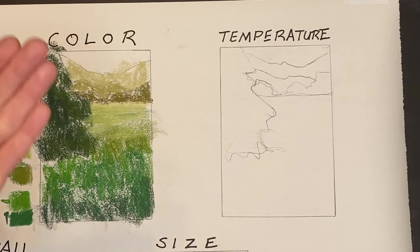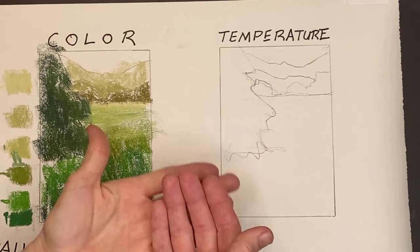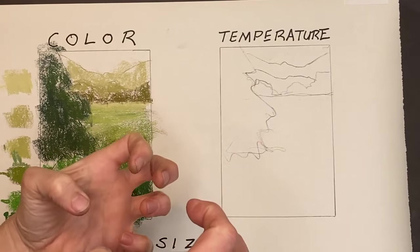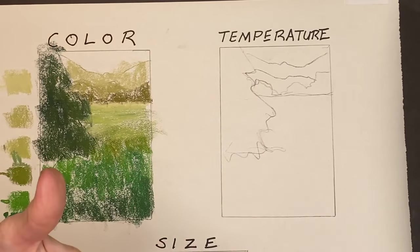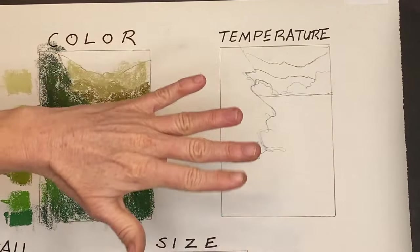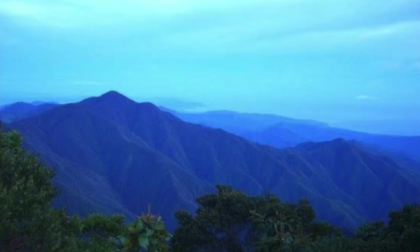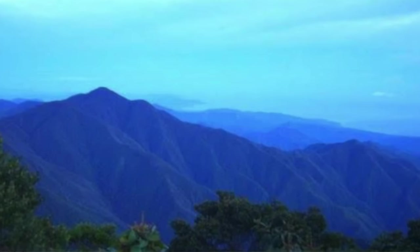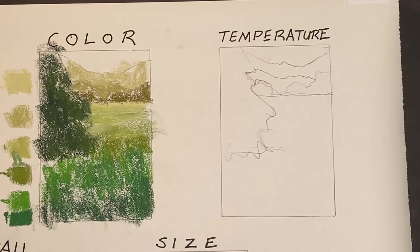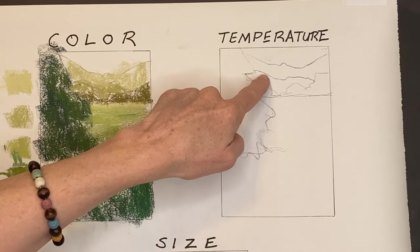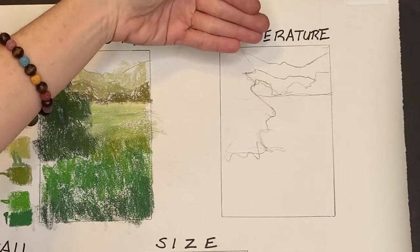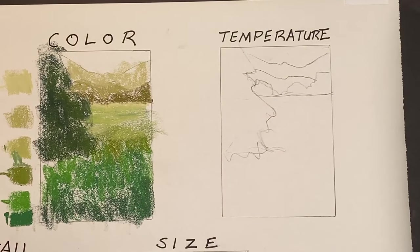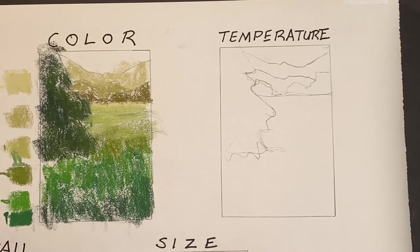Color temperature gets cooler in the distance because of our atmosphere — literally our air getting in the way and changing color to a cooler temperature. Have you ever noticed how distant mountains look blue or purple, whereas if you're at the base of a mountain all the trees look green? Why don't they look green in the distance? It's all of that atmosphere in between us and the distance.